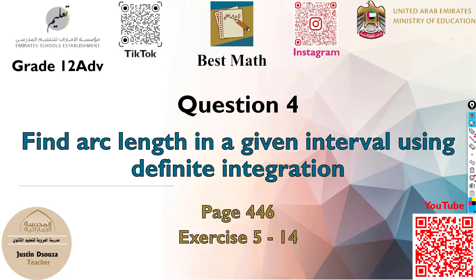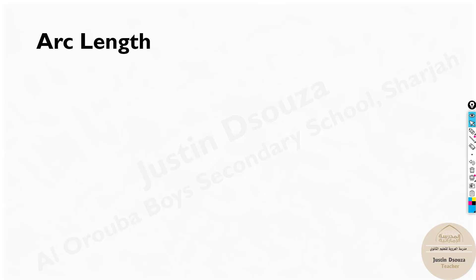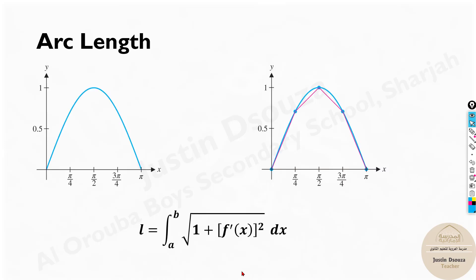Question number four is to find an arc length using definite integration. The arc length formula is given like this: integral limits a to b square root of 1 plus f prime of x, the derivation of the function, the whole squared dx. Please remember this formula and we can solve any of these problems.